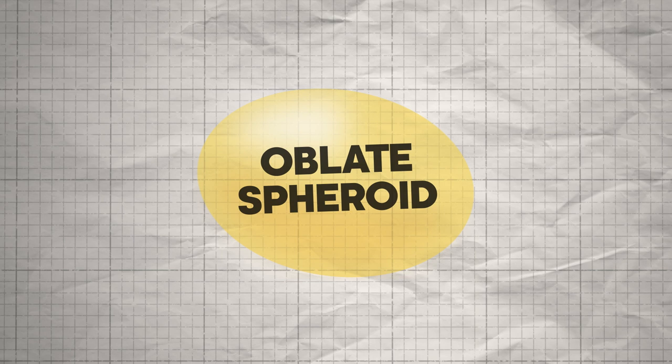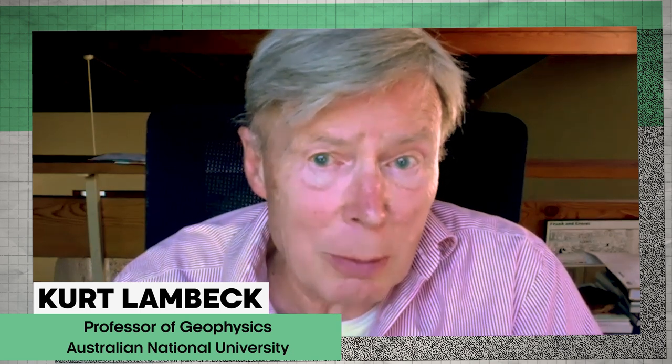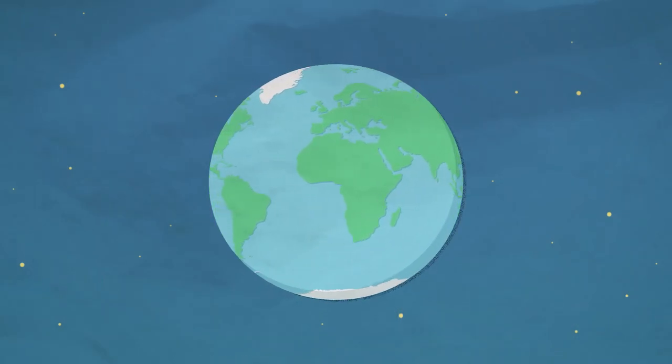It's actually what's called an oblate spheroid. The best way to describe it is as a rugby football. The short axis being the rotation axis about which the Earth spins, and the long axis lying in the equatorial plane.